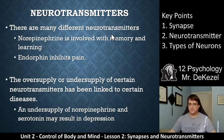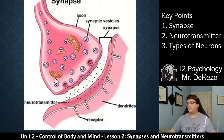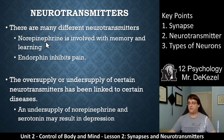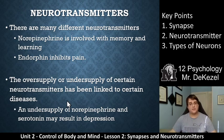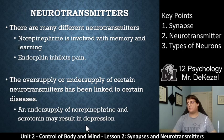There are many different neurotransmitters. At the end of your axon you have many different chemicals that can be sent across. One of them is norepinephrine, which is involved with memory and learning. Endorphins inhibit pain. The oversupply or undersupply of certain neurotransmitters can be linked to certain diseases — physical diseases or possibly mental health issues. An undersupply of norepinephrine and serotonin may result in depression. Everyone's chemicals are different in how they affect them, and it's imbalances that can really be the problem.